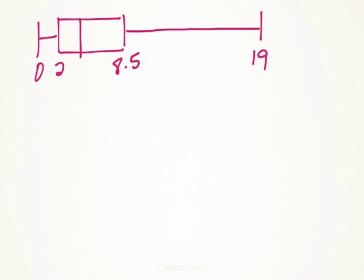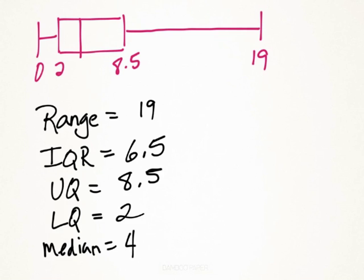So here's my data plotted out on a box and whiskers plot. And this will be the information your textbook will be asking you to input. So the range is nothing more than 19 minus 0, of course 19. The interquartile range is the difference between the upper quartile and lower quartile, so that's 6.5. And then the median, although not written here, is 4.